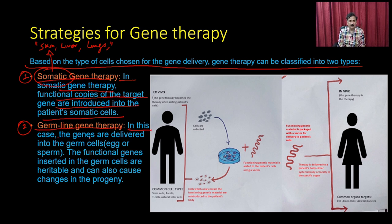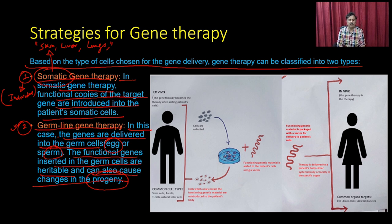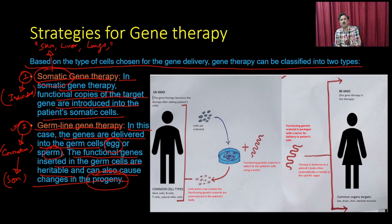In germline gene therapy, genes are delivered directly into germ cells such as eggs or sperm. The functional genes inserted in germ cells are heritable and can cause changes in the progeny. Somatic gene therapy treats a particular individual — for example, someone with functional defects in the lungs, liver, or brain. But in germline therapy, it affects future generations, even transmitting treatment to the son if done in the father's sperm.